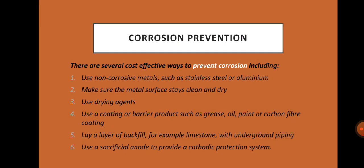Corrosion prevention: there are several cost-effective ways to prevent corrosion, including: use non-corrosive metals such as stainless steel or aluminum; make sure the metal surface stays clean and dry; use drying agents; use a coating or barrier product such as grease, oil, paint, or carbon fiber coating; lay a layer of backfill, for example limestones, with underground piping; and use a sacrificial anode to provide a cathodic protection system.